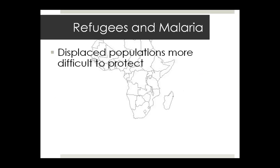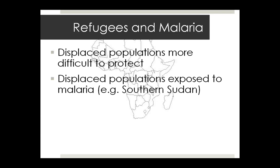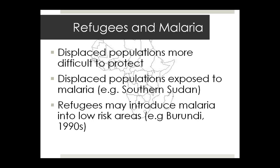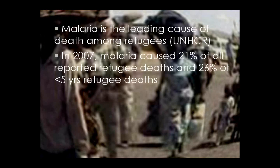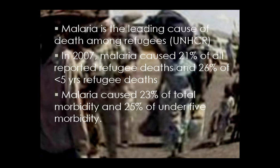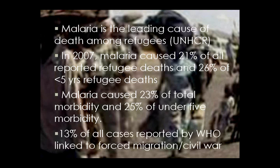Refugees and malaria: displaced populations are more difficult to protect. In southern Sudan, populations fleeing government troops moved into swamp areas and became infected. Refugees can introduce malaria into low-risk areas, as occurred in Burundi in 1990. Camps produce malaria. In 2007, malaria caused 21% of refugee deaths and 26% of under-five deaths. Malaria caused 20% of total morbidity and 25% of under-five morbidity. 13% of all cases reported by WHO were linked to forced migration and civil war.